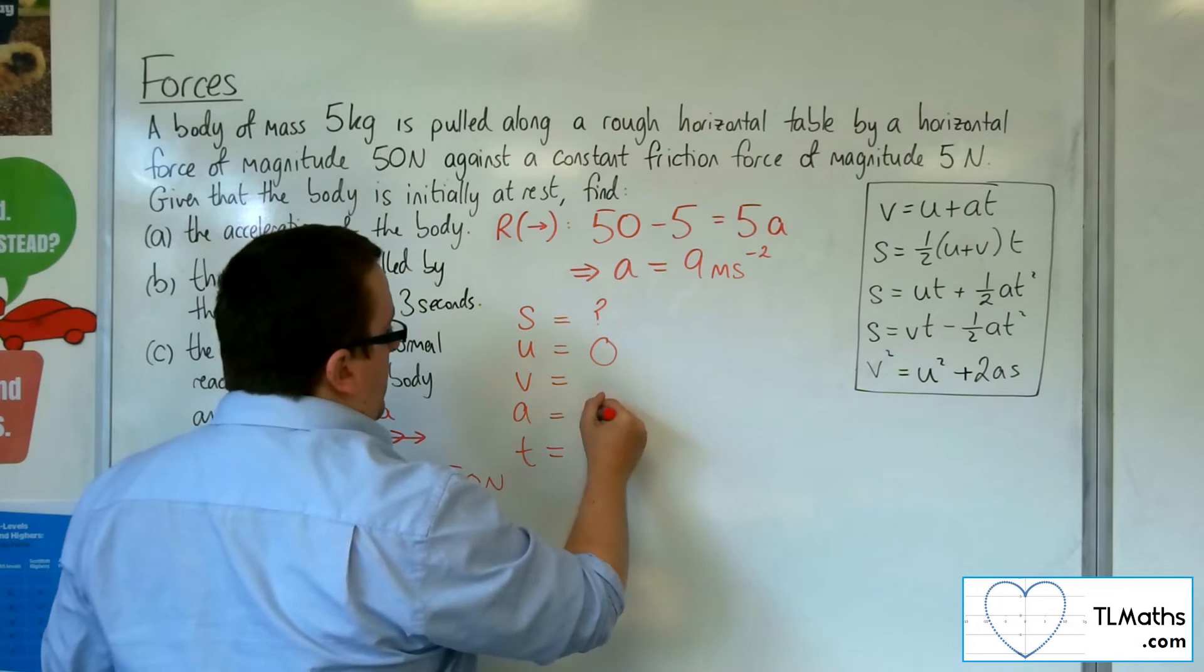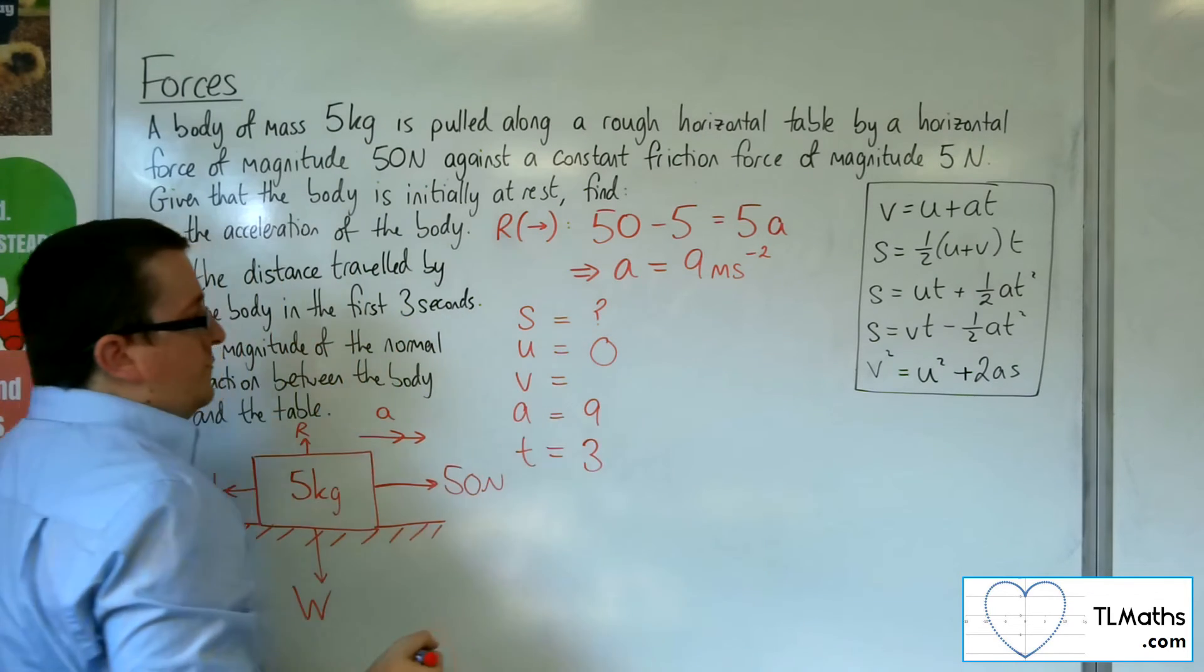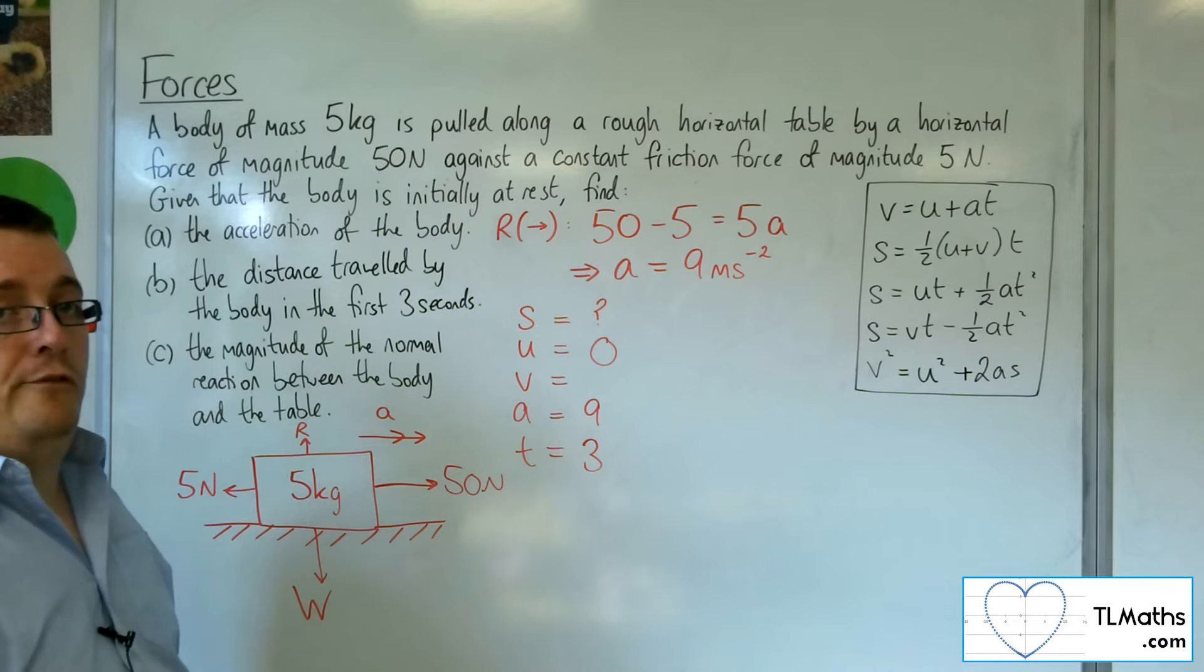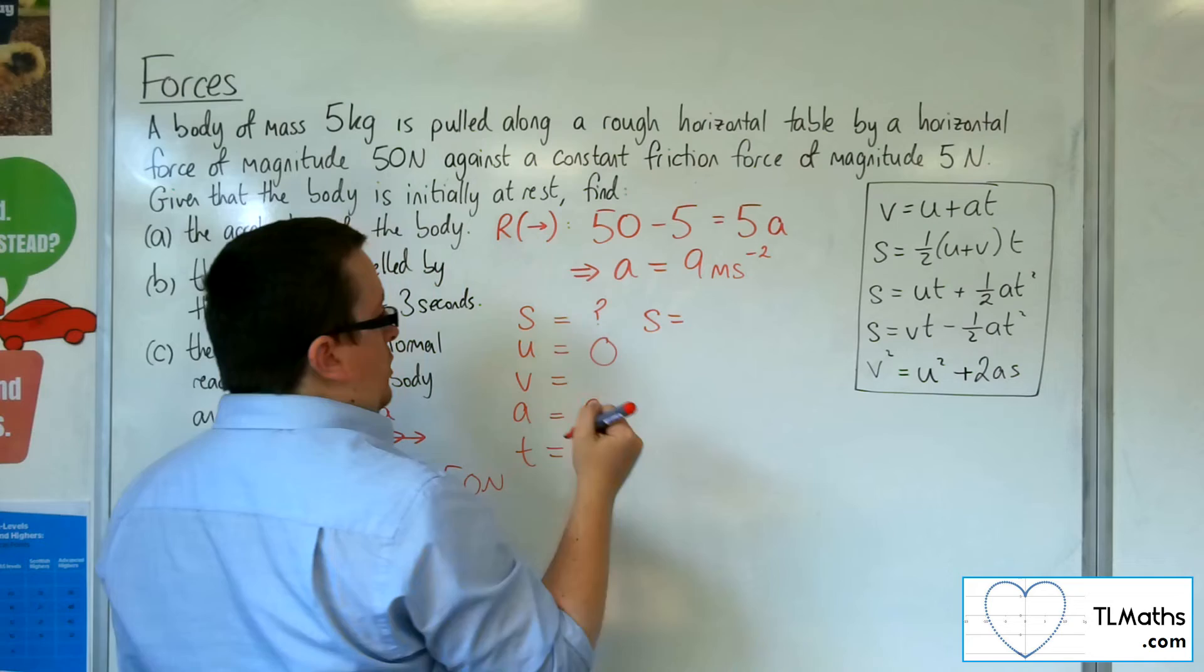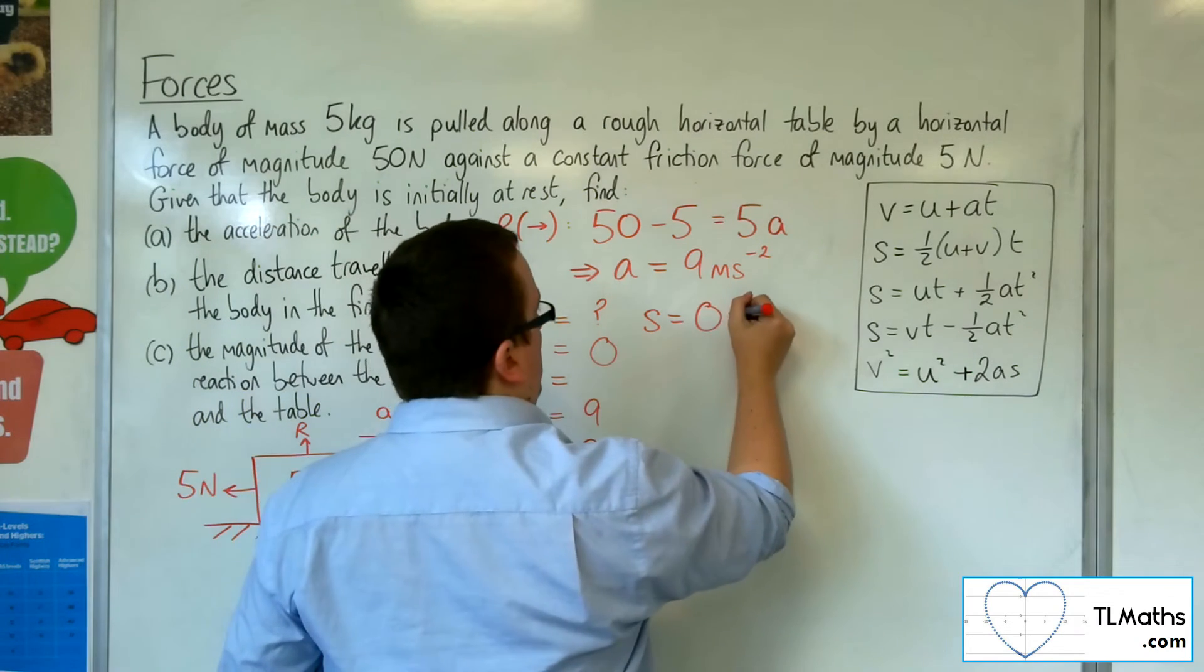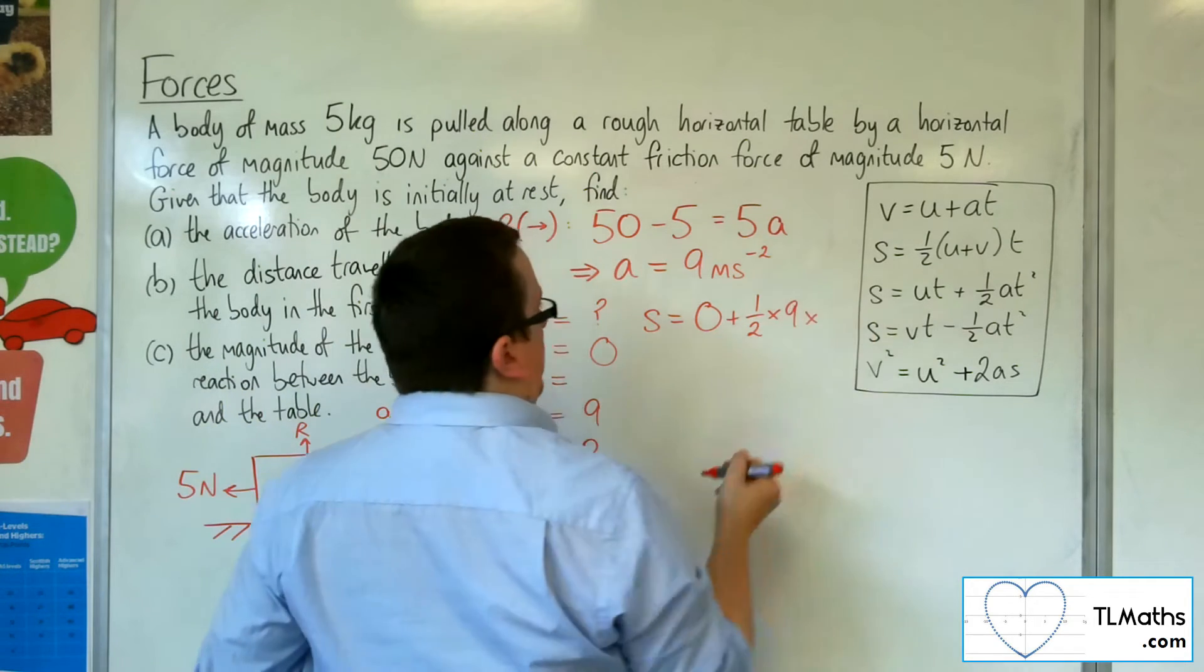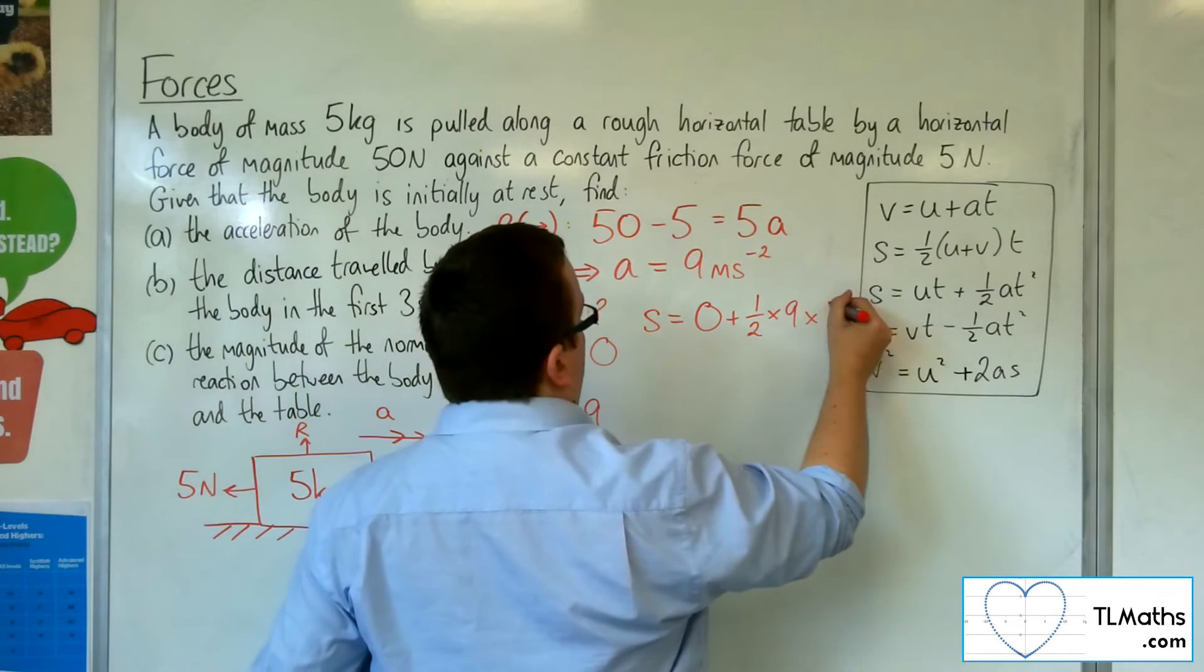The acceleration is 9. The time, the first three seconds, that's 3. So we want the equation that doesn't involve V, which is the third equation. So S is equal to U times T, 0 times 3, so 0, plus 1 half times A, which is 9, times by T squared, so 3 squared, which is 9.